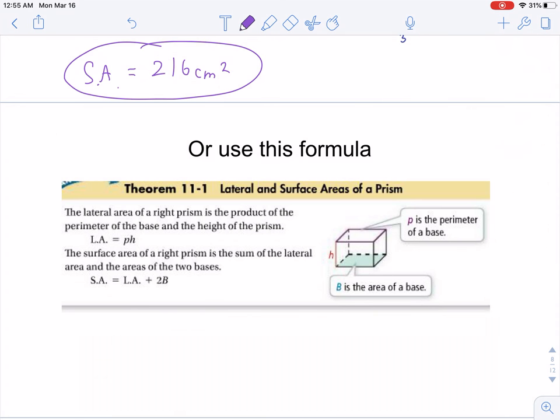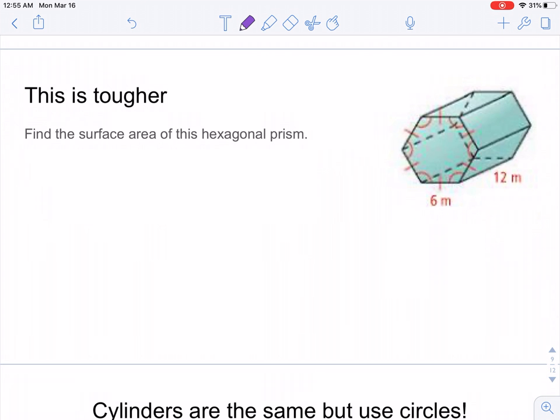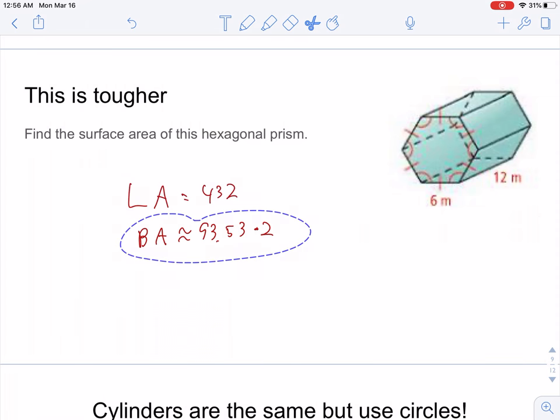We can also use this formula, but it's about the same thing. Now, try to find the surface area of this hexagonal prism. Lateral area should be 432. The base area is about 93.53 times 2, because there's two of those hexagons. And so, that means that the total surface area is going to be about 619.1 units squared. I hope we got that.